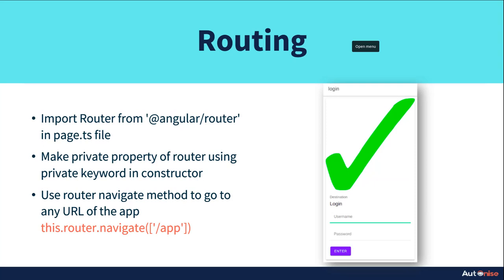Let's create a new login page for our whole application. In doing so, we'll be able to understand the whole routing in an Ionic project. We'll create an app where a user can give a username and password, authenticate it, and only then proceed to the main application. Let's go back to the code and implement this.